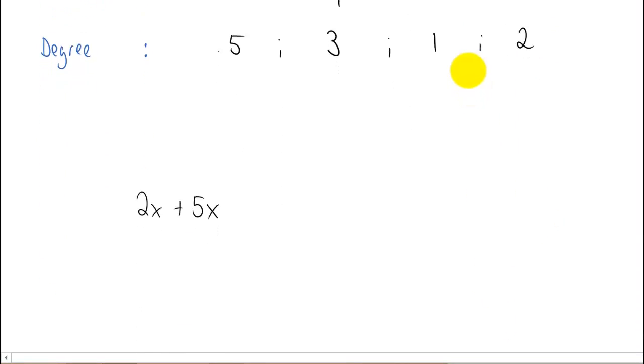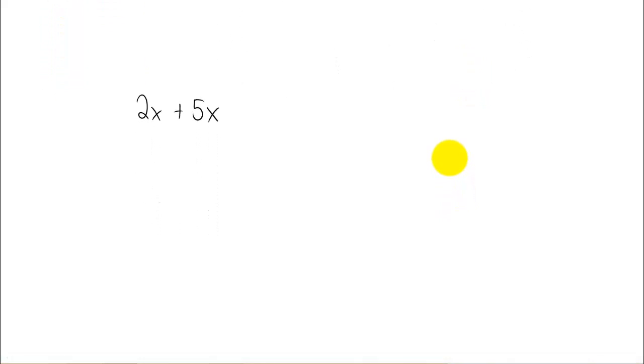Alright, let's talk a little bit more vocabulary. Now what I've written down here is technically a binomial. It has two terms. But you know from previous chapters that you can take 2x plus 5x and combine them to get 7x.